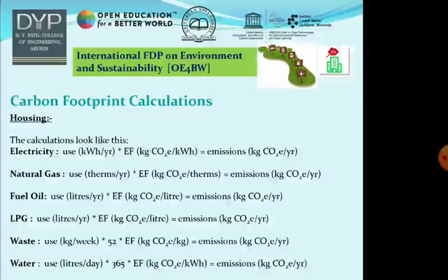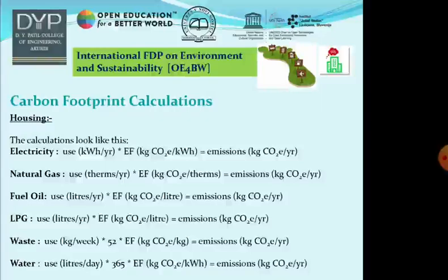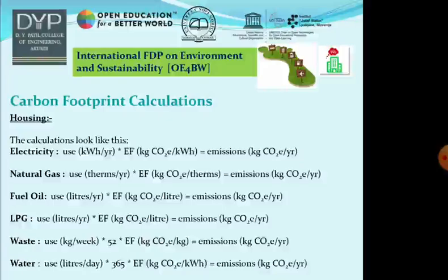Having gathered this information, we multiply our personal usage by the Emission Factor (EF). For energy, usage in kWh per year multiplied by EF in kg CO2 per kWh gives CO2 emission in kg per year. Similarly, we can calculate for natural gas, fuels, LPG, waste, and water use. For water use, the quantity in liters per day multiplied by 365 and then by EF gives CO2 emission in kg per year per individual.